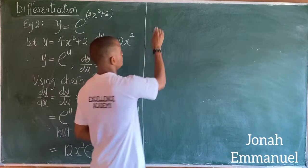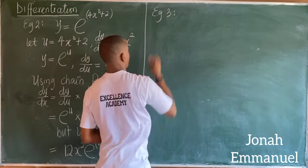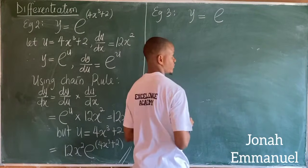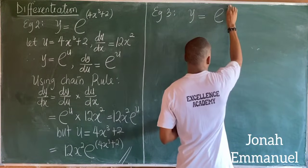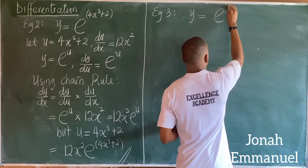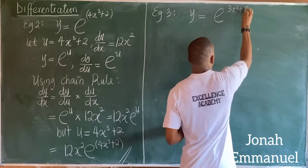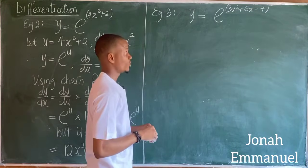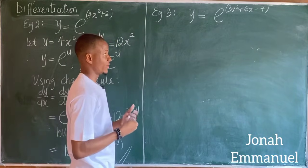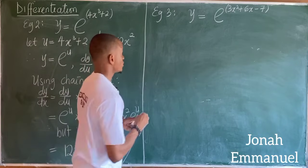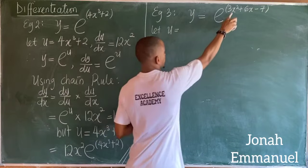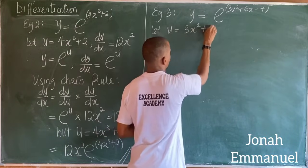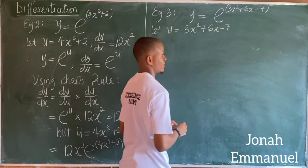One last example — example 3. What if I have that y is equal to exponential of 3x squared plus 6x minus 7? So differentiate this. This is an exponential function, so I'll have to employ the idea of chain rule. Let u be equal to the index of the exponential function, that gives you 3x squared plus 6x minus 7.